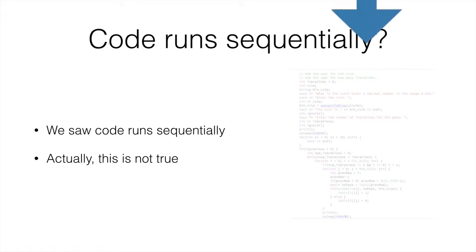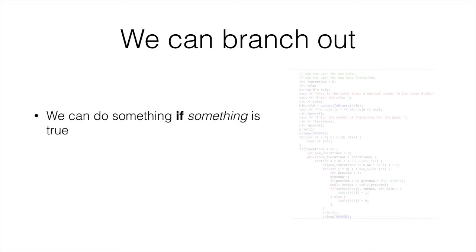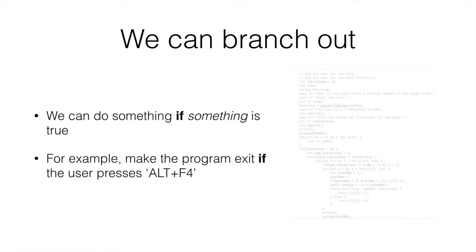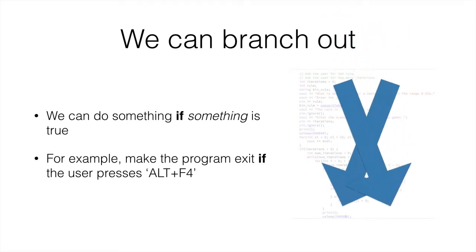What we can do is we can branch out — we can do something depending on something else. For example, if the user presses ALT+F4, you exit the program. If they don't press ALT+F4, then you don't do anything. This is what I call branching out, and this is why we use if statements.